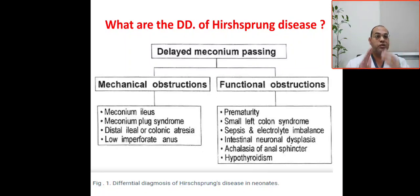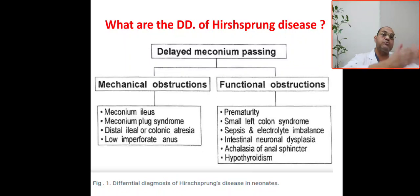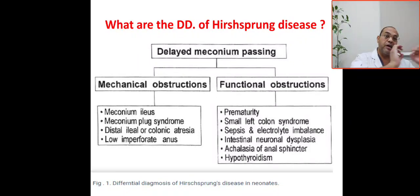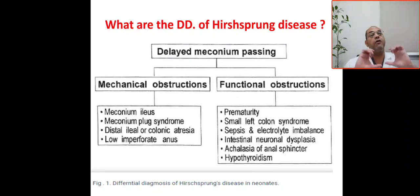Depending on the clinical assessment of the baby — if the baby is septic or critically ill — it will be associated with septic ileus. For biochemical assessment, if there is an electrolyte disturbance like hypokalemia, it will cause paralytic ileus, also called functional intestinal obstruction.